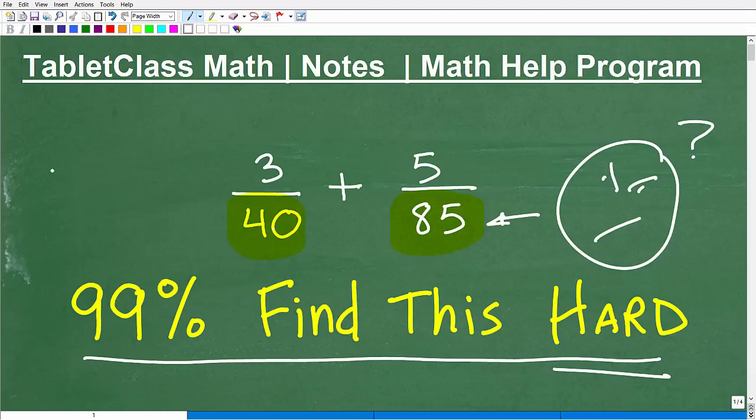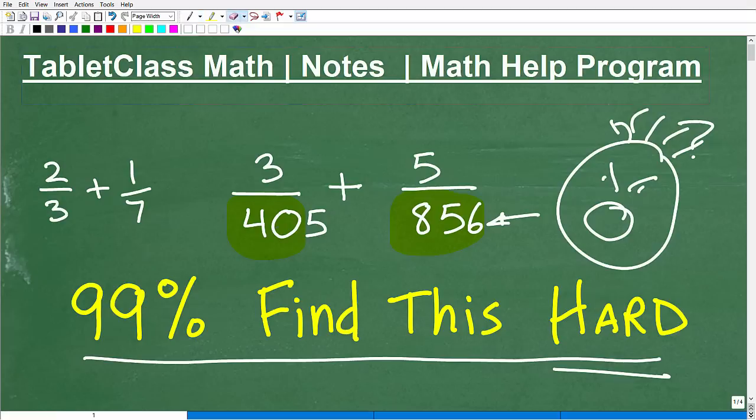Certainly if you're dealing with nice easy numbers, like let's say 2/3 plus 1/7, most of you out there could find the LCD. But now we're dealing with numbers a little bit more challenging. And these are pretty easy numbers. Imagine if I put in, let's say, 405 and 856 or something like that, then most people their hair would start going like this, and then they would just be, maybe more along the lines of, like, I'm not doing this problem. Well listen, you've got to pay attention to what I'm going to be doing here because you need to know how to find the LCD.